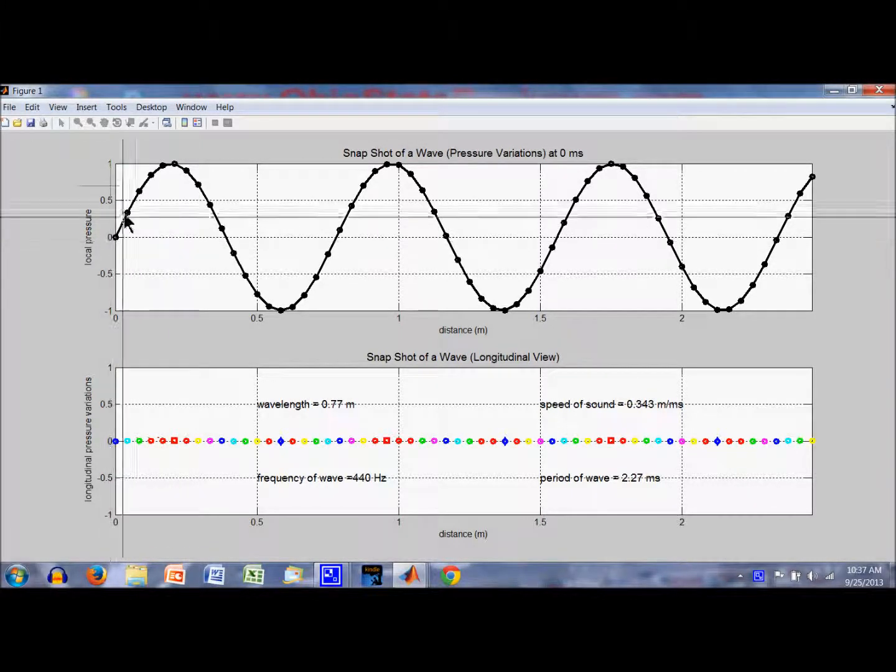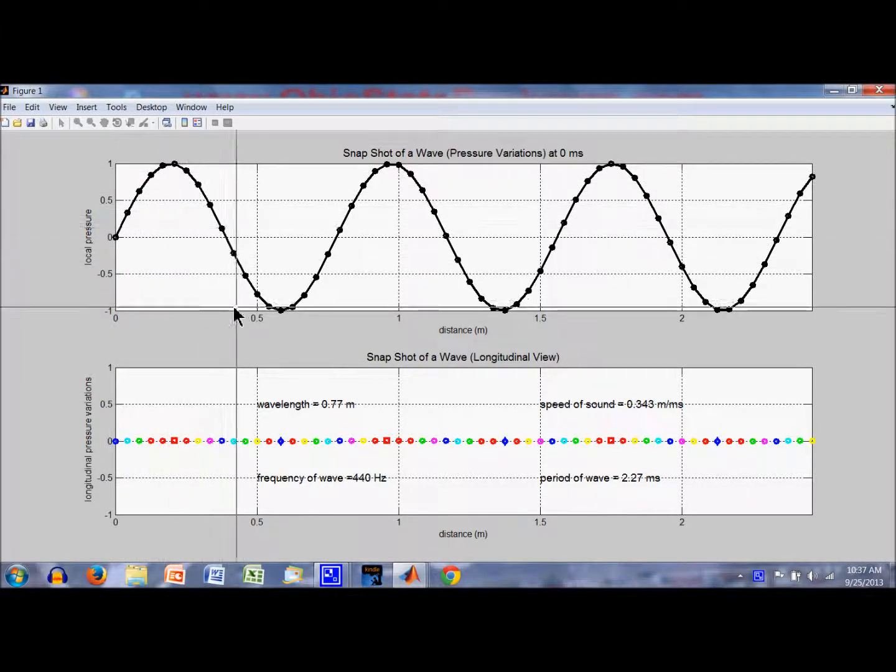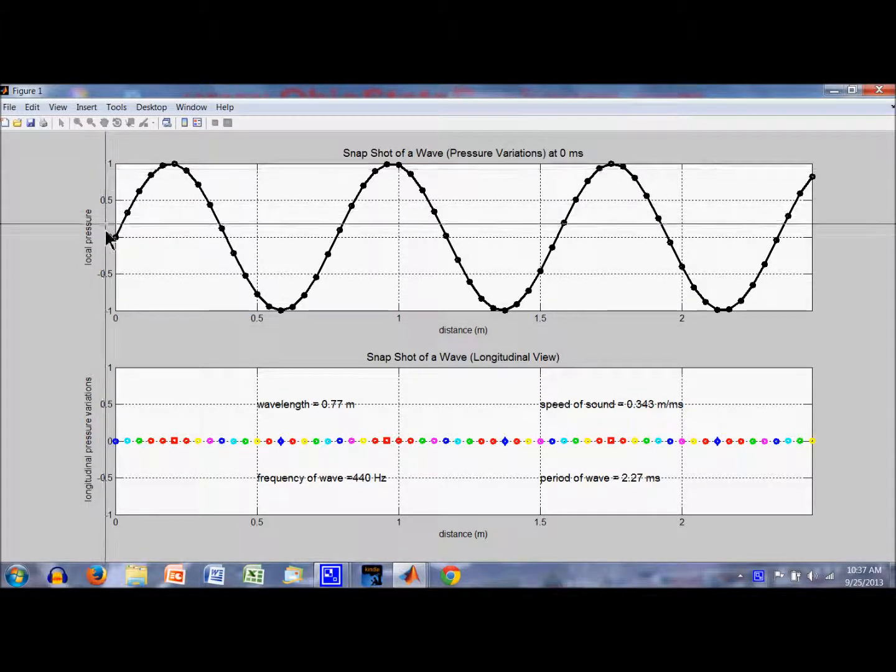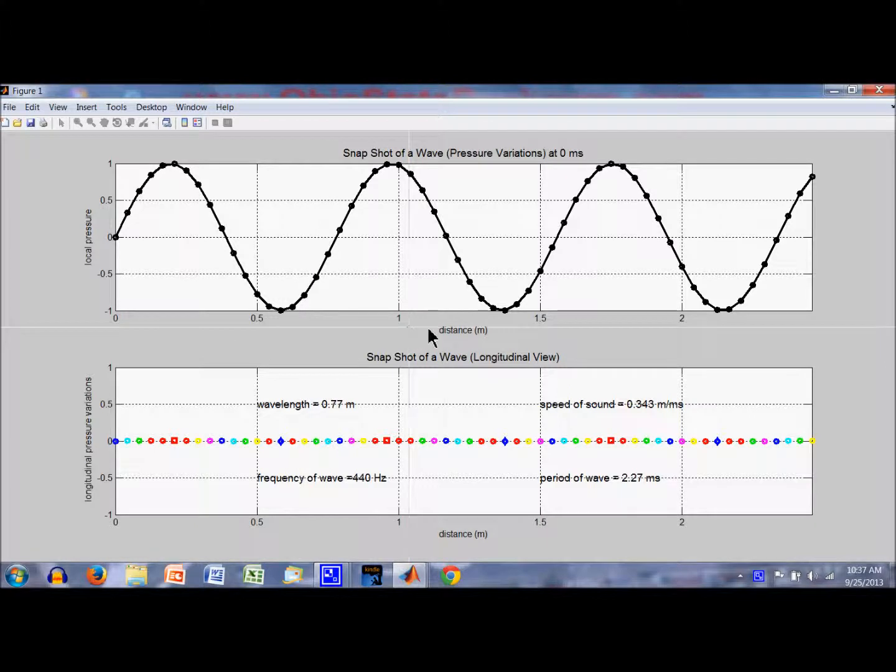The top graph is a plot of the pressure along the wave. I'm plotting pressure along this vertical axis, and I'm plotting it against distance along the horizontal axis.